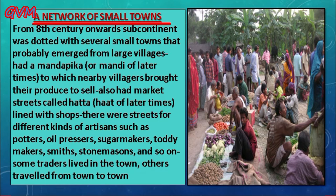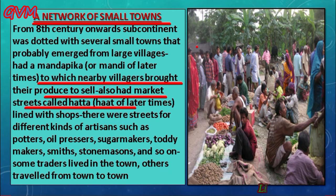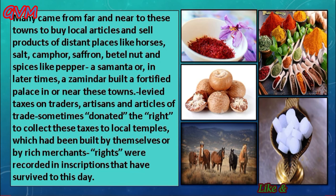The next topic is a network of small towns. After the 8th century, many small towns emerged out of large villages all over the Indian subcontinent. These towns had mandapikas — markets or mandis — where nearby villagers brought their agricultural produce to sell. They also had a certain kind of street market called haat, where shopkeepers lined up their shops and there were streets for different artisans such as potters, oil pressers, sugar makers, toddy makers, smiths, and stone masons.